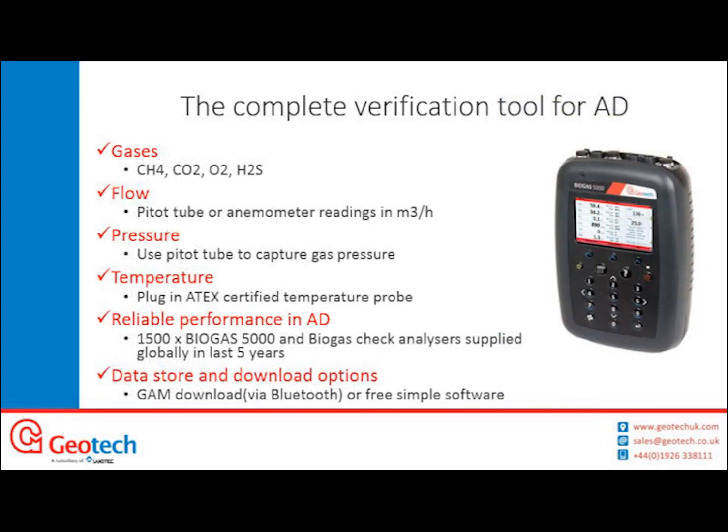So this is the Biogas 5000, your complete verification tool for AD. The Biogas 5000 can actually measure six gases in total: CH4, CO2, O2, H2S, CO and NH3. As standard, the analyzer comes measuring CH4, CO2 and O2, and the other three gases are optional extras which can be configured in different combinations.